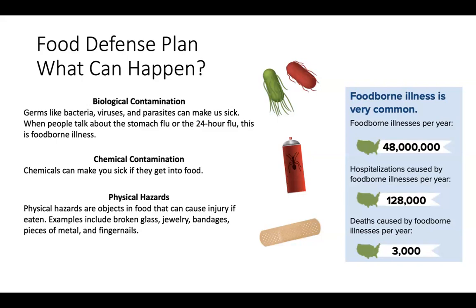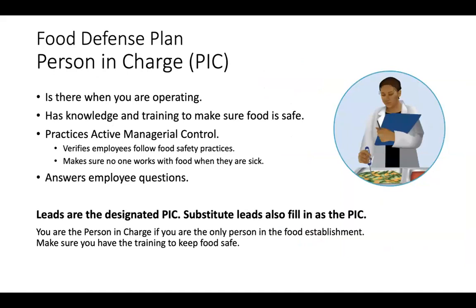The statistics on foodborne illness prove how important it is to follow the food safety plan. Person in Charge. Every food establishment must have a person in charge, also referred to as the PIC. The person in charge is there when you are operating, has knowledge and training to make sure food is safe, practices active managerial control, and answers employee questions. Active managerial control means taking action to verify and ensure that employees follow food safety practices and make sure no one works with food when they are sick. Leads are the designated PIC. Substitute leads also fill in as the PIC. Remember, you are the person in charge if you are the only person in the food establishment.